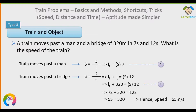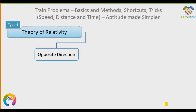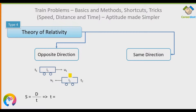Now let's look at the fourth type — Theory of Relativity. There are two cases: trains moving in opposite directions and trains moving in the same direction. For opposite direction: if Train 1 has length L1 and speed U1, and Train 2 has length L2 and speed V1, the time to completely cross each other is T = (L1 + L2) / (U1 + V1).